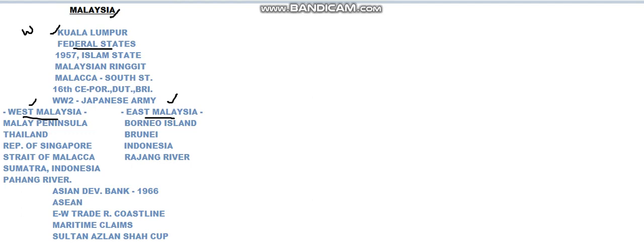Malaysia is a federal states union, called the Federation of Malaysia, where all the federal states are united. Malaysia got its independence in the year 1957 after a long colonial struggle. It is totally a Muslim majority country and the state religion is Islam. Malaysia's currency is the Malaysian Ringgit.